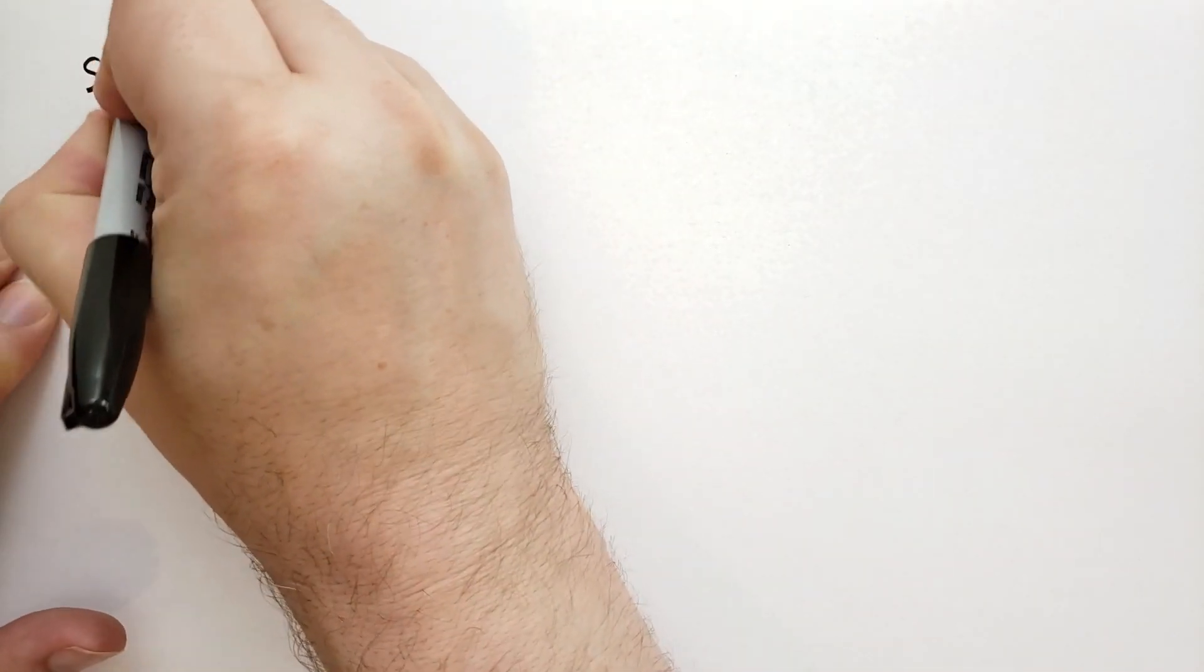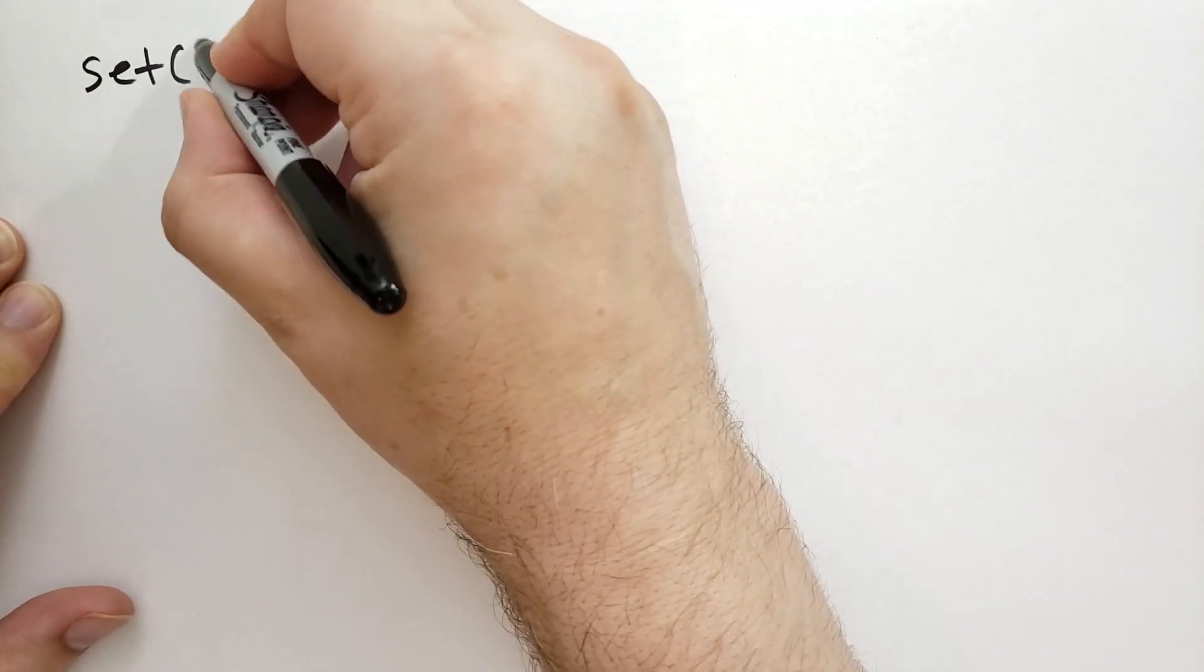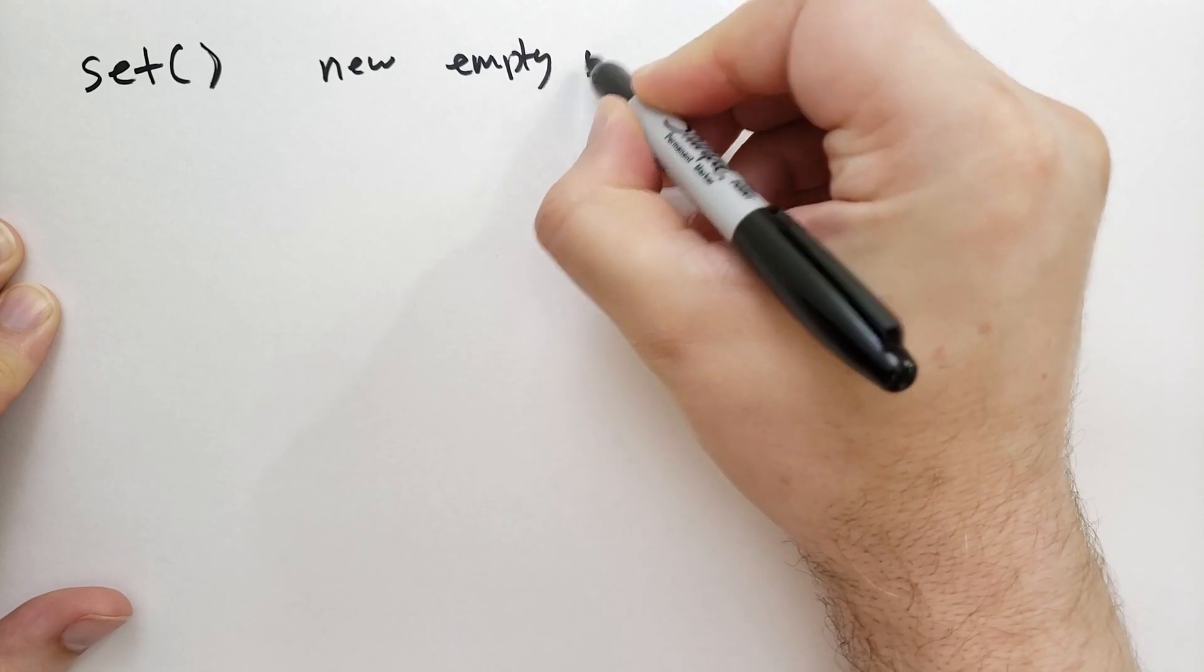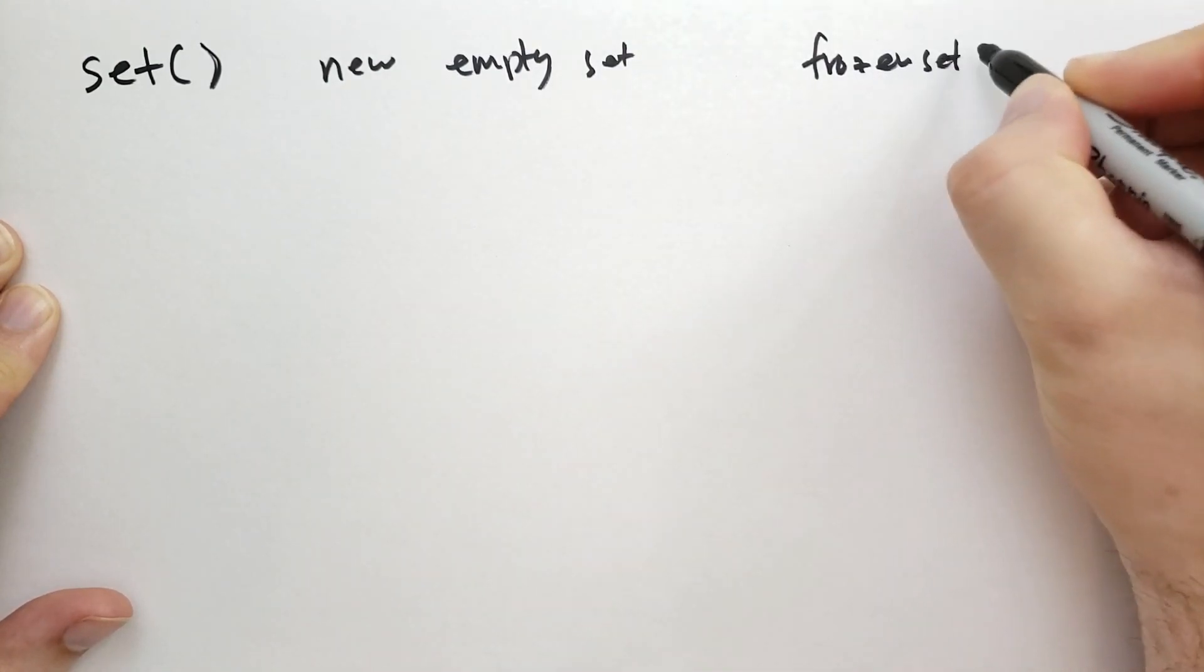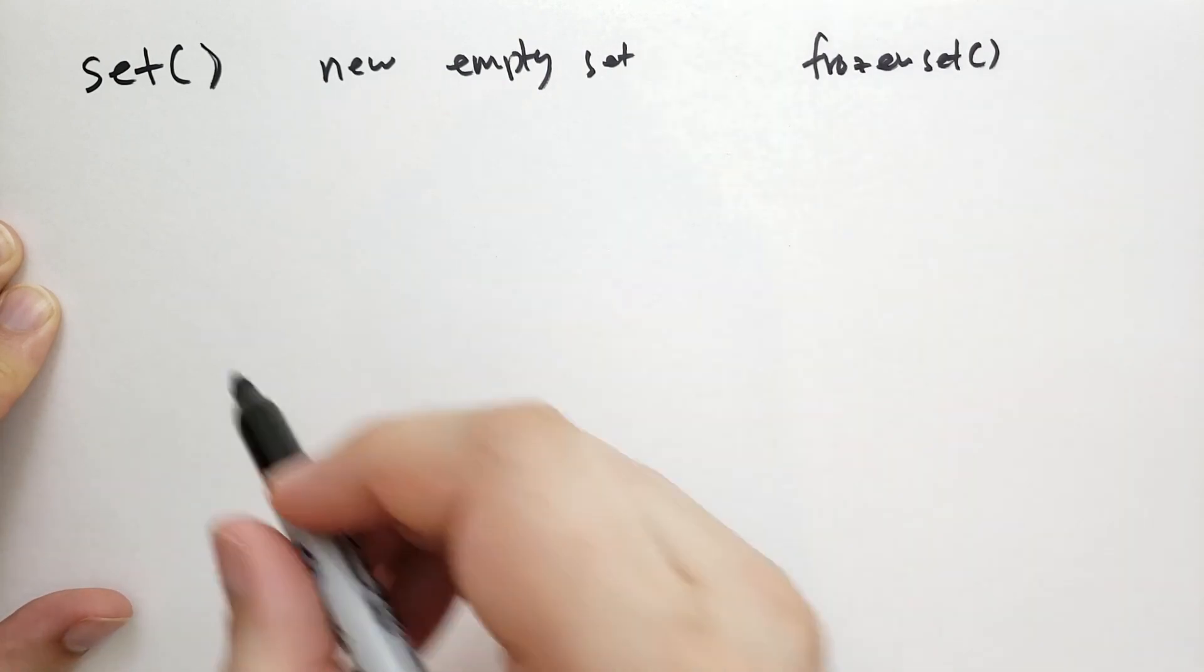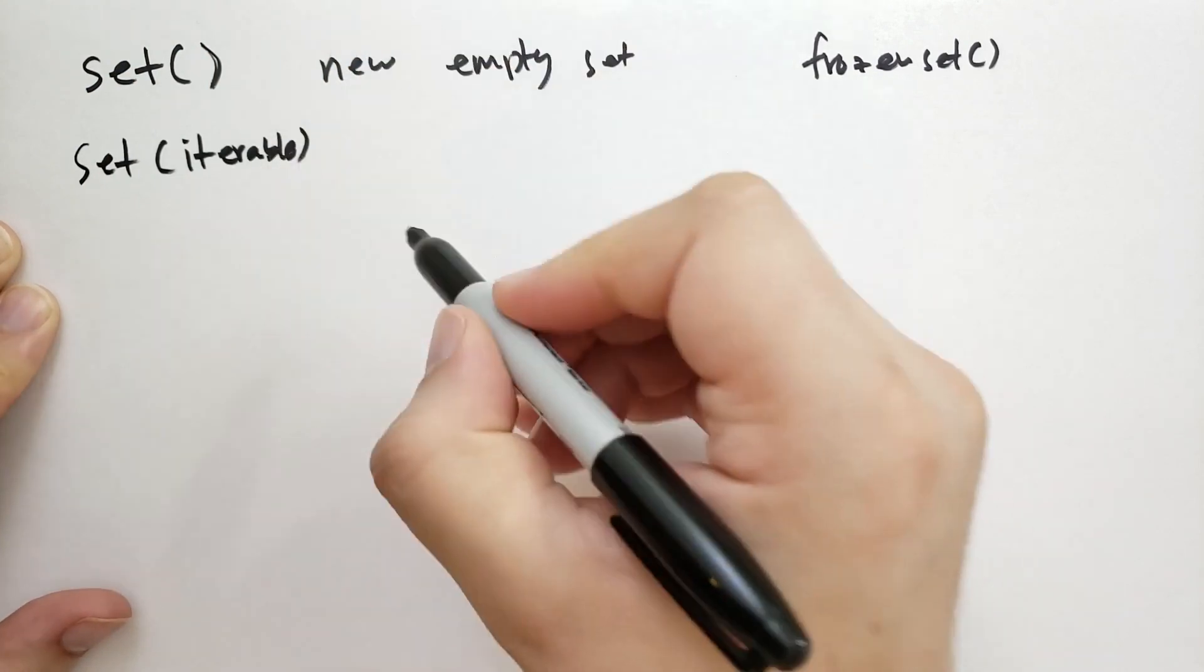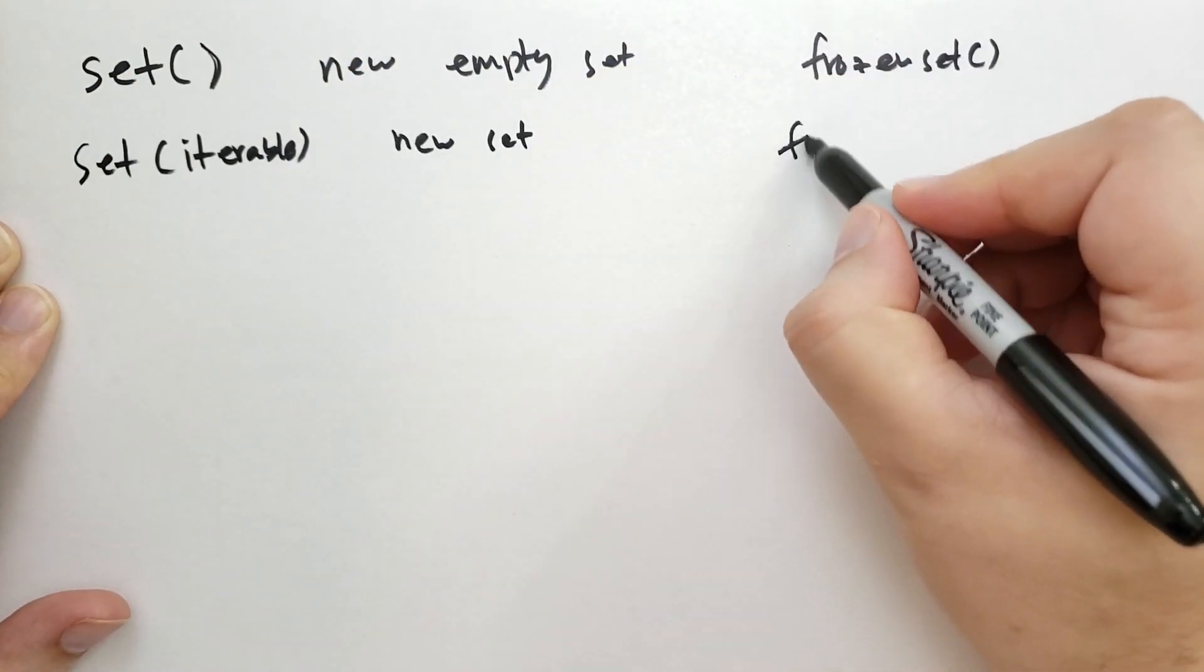There are a number of functions, not that many, that deal with sets. So we have set that would return a new empty set. We also have frozen set that does the same, but with the frozen set. And we can also pass in some iterable to set and this will create a new set from those items and the same thing for frozen set.